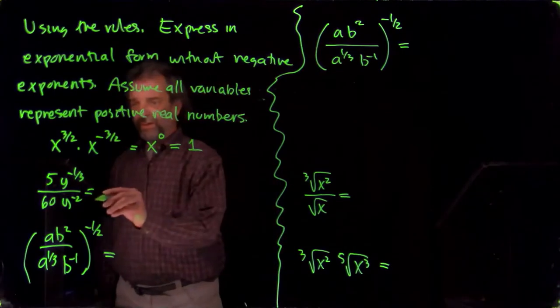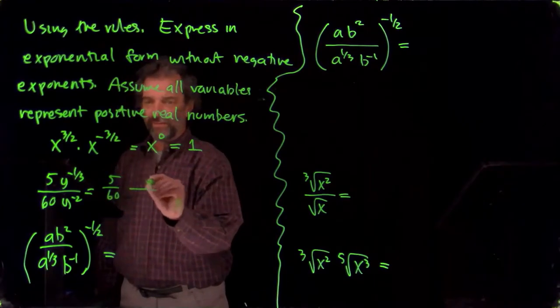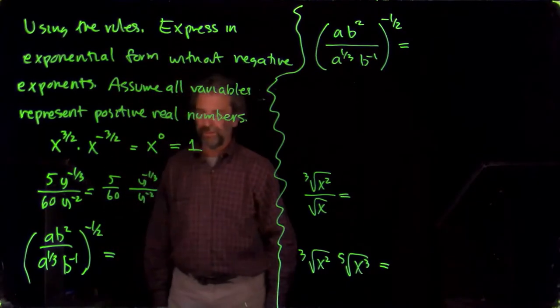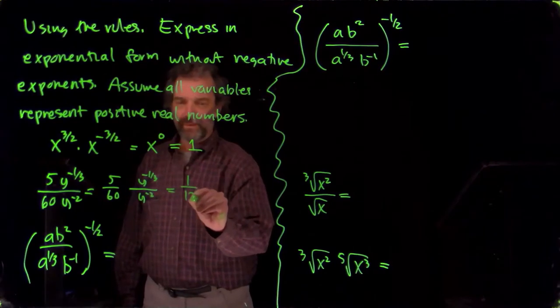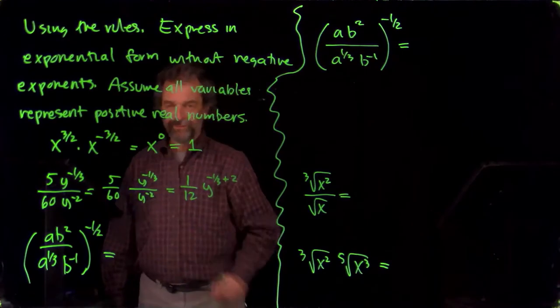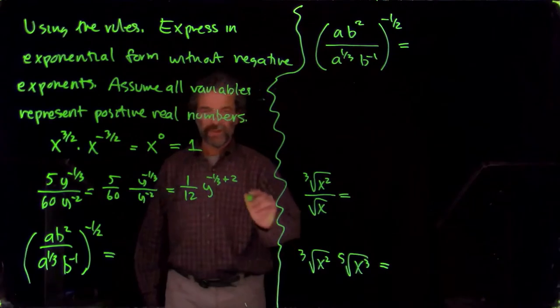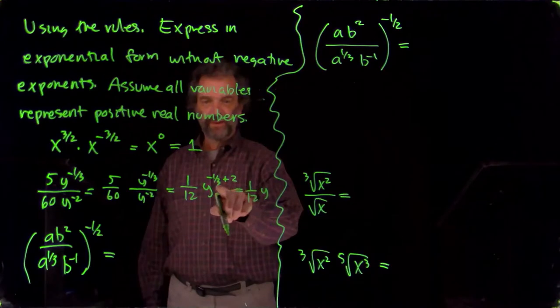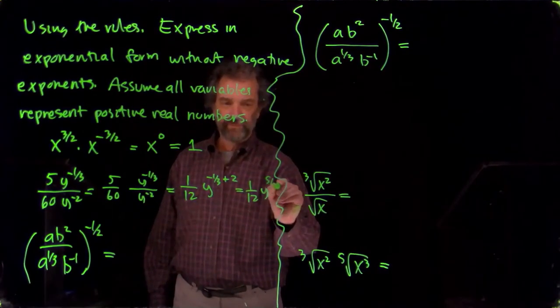So over here, I'm going to rewrite this like this, five sixtieths and then y to the minus one-third over y to the minus two to separate the two problems. And so you get one twelfth times y to the minus one-third plus two. Because y to the minus one-third minus a minus two, that's plus two. So that's one-twelfth, y to the five-thirds. Look at that.